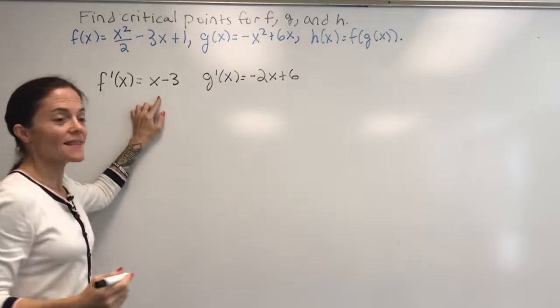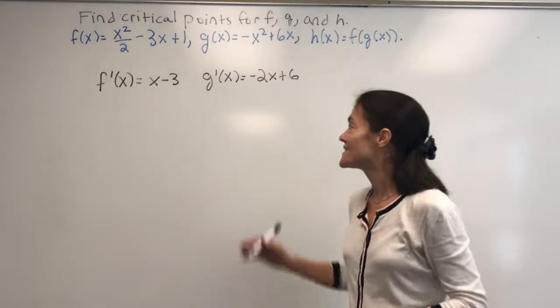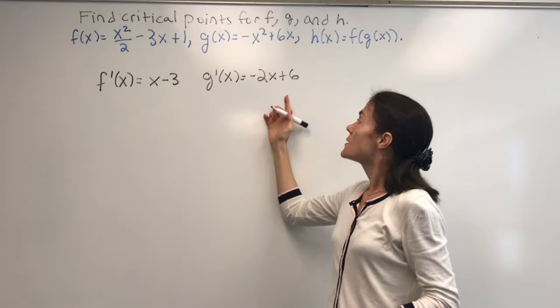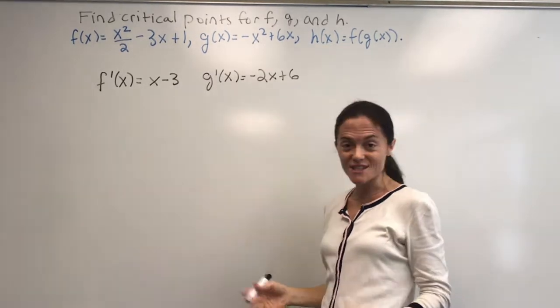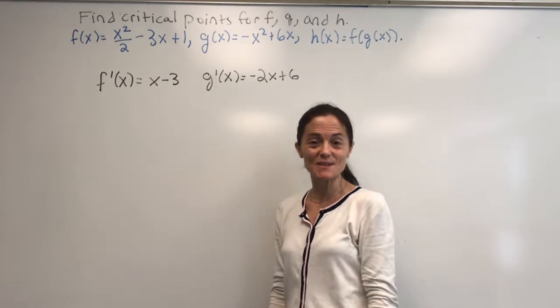When you set these, these exist everywhere. These are lines, in fact. So the critical points for f or the critical points for g, we just set the derivatives to zero.